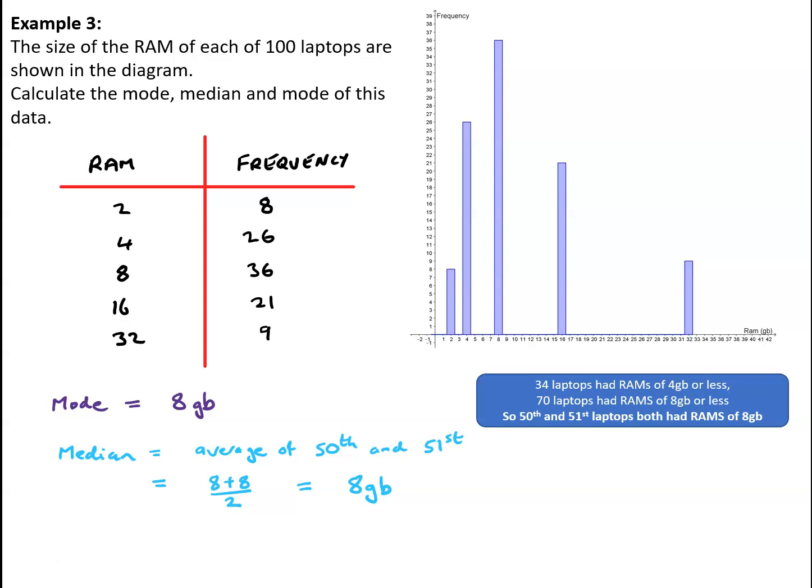The mean calculation we can do as 2×8 + 4×26 + 8×36 + 16×21 + 32×9, and divide all that by 100, which gives me 1032 divided by 100. So we have a mean RAM of 10.32 GB.